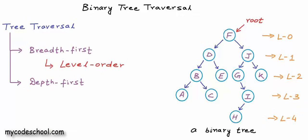In breadth-first approach, for any node, we visit all its children before visiting any of its grandchildren. In this tree, first we visit F, then D, and next we are going to J — we are not going to any child of D like B or E along the depth. But in depth-first approach, if we go to a child, we would complete the whole subtree of that child before going to the next child.